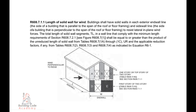R-608.7.1.1, Length of Solid Wall for Wind. Buildings shall have solid walls in each exterior end wall line — the side of a building that is parallel to the span of the roof or floor framing — and side wall line — the side of a building that is perpendicular to the span of the roof or floor framing — to resist lateral in-plane wind forces. The total length of solid wall segments TL in a wall line that comply with the minimum length requirements of section R-608.7.2.1 shall be equal to or greater than the product of the unreduced length of solid wall from tables R-608.7.1a through 1c (U.R.) and the applicable reduction factors, if any, from tables R-608.7.2, R-608.7.3, and R-608.7.4 as indicated by equation R6-1.